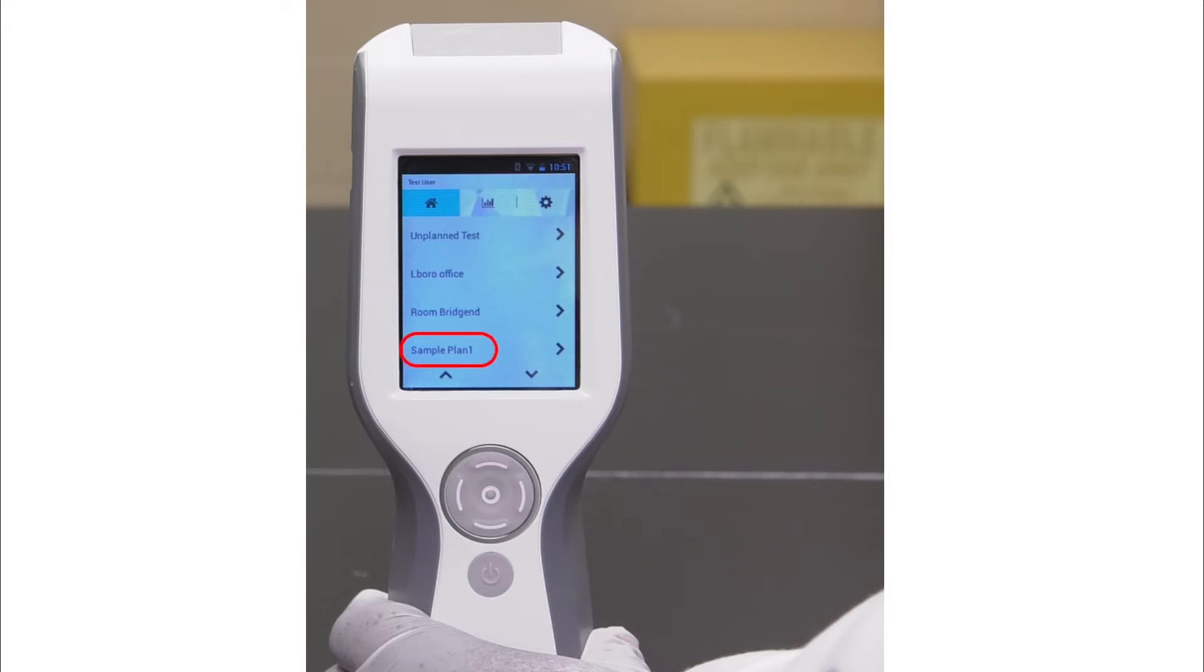Select a sample plan, assuming one has been created using the 3M Clean Trace Hygiene Management software. The test location and test type are displayed on the next screen.